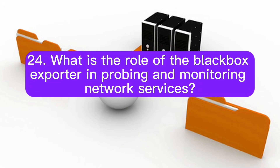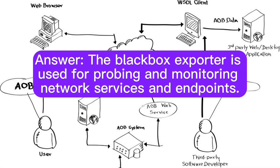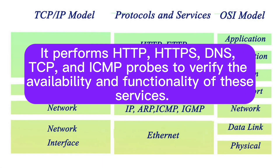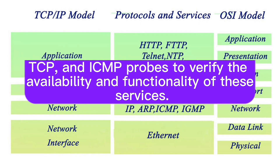What is the role of the black box exporter in probing and monitoring network services? The black box exporter is used for probing and monitoring network services and endpoints. It performs HTTP, HTTPS, DNS, TCP, and ICMP probes to verify the availability and functionality of these services.